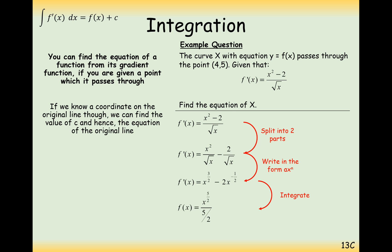Increase the power by 1, divide by the new power. So it would be x to the power of 5 over 2 divided by 5 over 2, or in other words times by 2 over 5. And then it's going to be 2x to the power of 1 half divided by that new power of 1 half. We'll rewrite this as two-fifths of x to the power of 5 over 2 minus 4x to the power of 1 half plus c. So that's the integration part of the question.